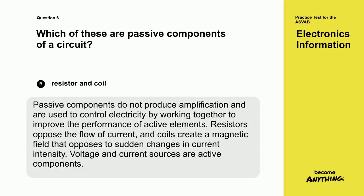Passive components do not produce amplification and are used to control electricity by working together to improve the performance of active elements. Resistors oppose the flow of current, and coils create a magnetic field that opposes sudden changes in current intensity. Voltage and current sources are active components.